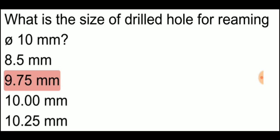What is the size of drilled hole for reaming diameter 10 mm? Diameter 10 mm hole, and we need to ream it. So what size reamer will we use? 9.75 mm.